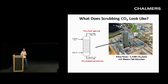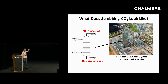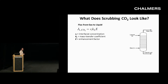What ends up happening is this solvent is ultimately saturated with CO2 at the bottom of the tower, and the gas leaving the top is free of CO2. You can imagine that the more stages you have — the taller this tower is — the more carbon dioxide you separate. There's a very simple flux equation showing the flux of CO2 as it moves from the gas phase into the liquid.